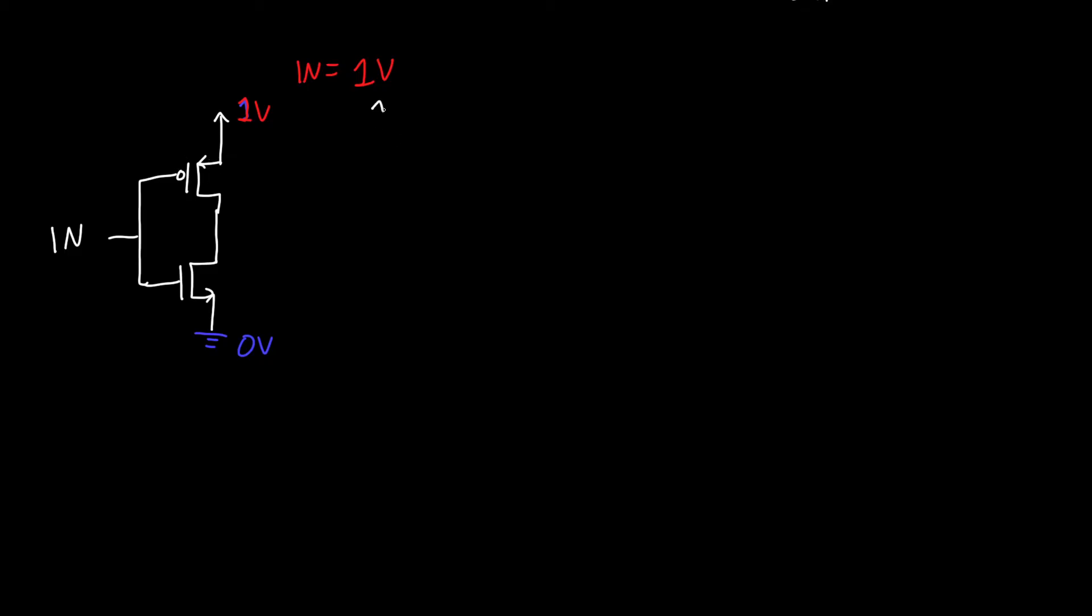But the NMOS is going to be on, so it's going to act like a short circuit. And our output, which is here, is equal to 0 volts, which is exactly what we're looking for. Now when our input is instead 0 volts, then the PMOS is on, so the PMOS just acts like a wire, and the NMOS is off or disconnected. And so our output, which is right here, is connected to VDD or 1 volt, so our output is just equal to 1 volt.